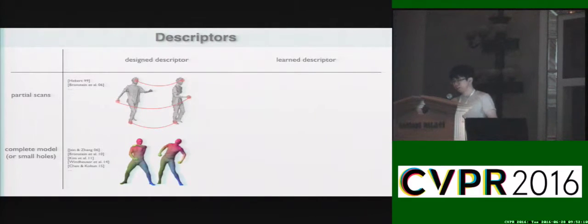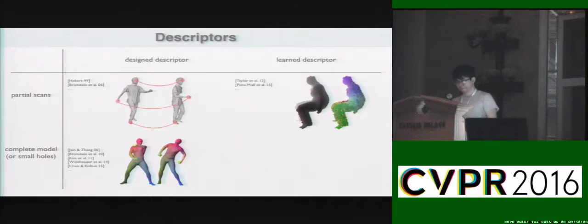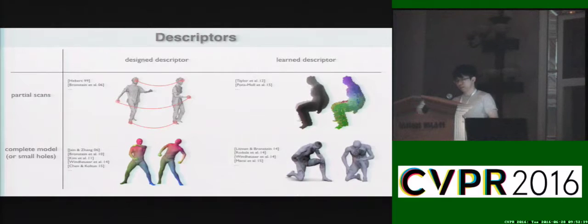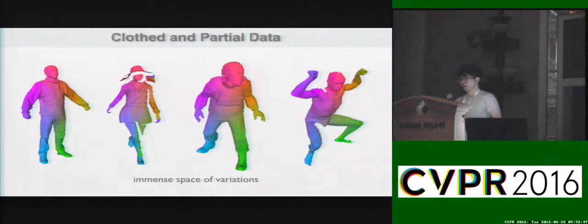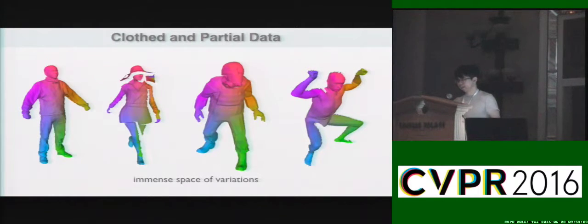Other methods such as heat kernel signatures try to use the global information to provide an unambiguous descriptor. However, such methods often require almost complete inputs. Since we still want to handle partial data as our inputs, recently learning-based techniques have been applied to depth images to provide a pixel-wise descriptor. Such learning-based techniques can also be applied onto full human models to increase the accuracy. However, note that all existing methods can only handle naked or skin-tight clothing human bodies, and our ideal descriptor should be able to handle all other variations brought from clothing, including hats, dresses, or even a gas mask.